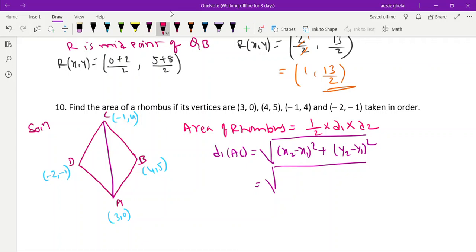x₂, this is x₁, y₁, and this is x₂, y₂. (-1 - 3)², y₂ is 4 minus 0 whole square. -1 - 3 is -4, and this is 4.